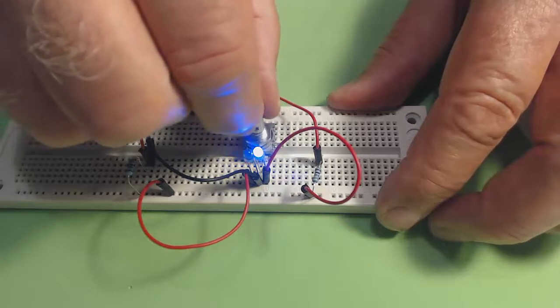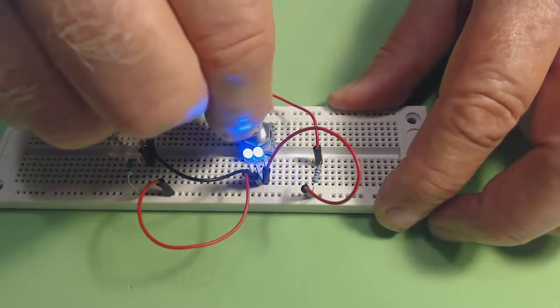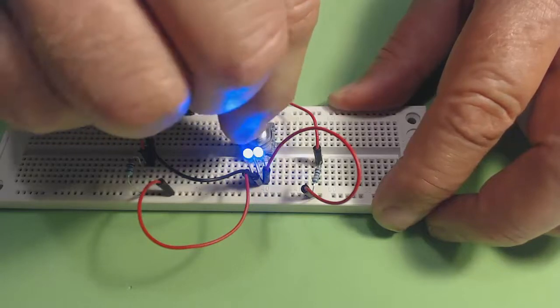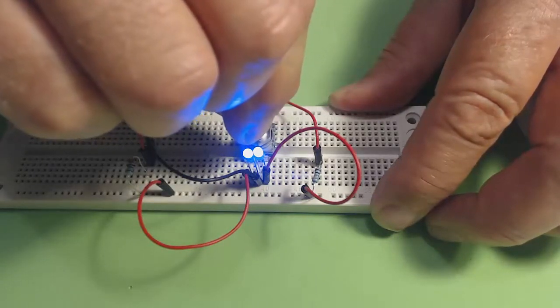In part 1 of this series, we hooked a rotary encoder up to a breadboard and demonstrated how it worked by blinking some LEDs. Now let's hook it up to an Arduino and see what we can do.